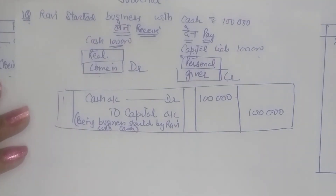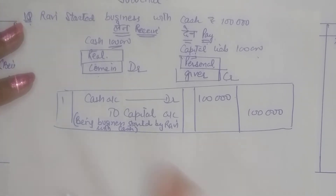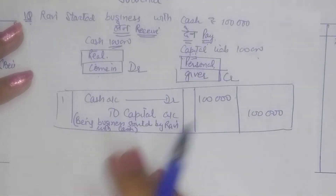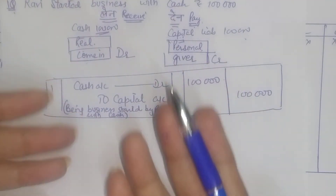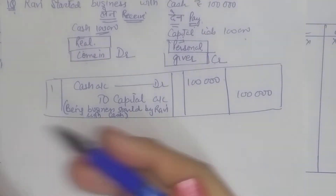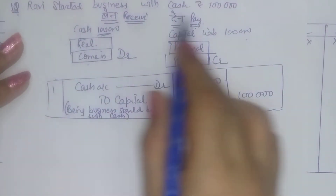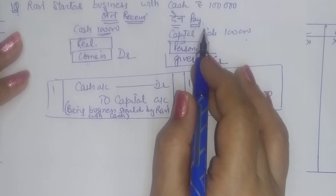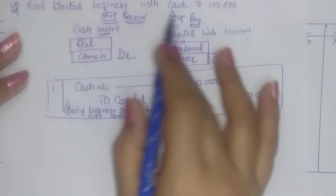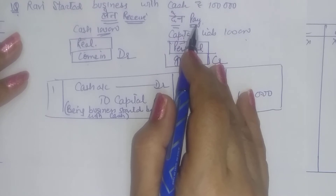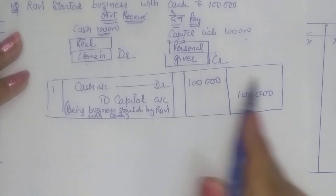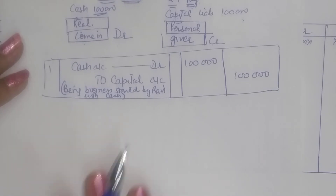So what steps did we follow? We saw the two effects of the business transaction in business language — lena-dena. What do you receive? What do you pay? In business the principle is always: give with one hand, take with the other. So note the two effects — receive and pay. Receive and pay are not always direct; sometimes it becomes receivable, sometimes payable. Apart from that, at times due to profit and loss, both sides don't balance, so we write profit/loss to balance. Identify debit and credit accordingly and record the entry.